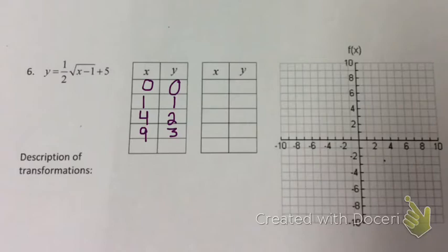Now to actually apply the transformations. If I look under my radical, I notice that I have x minus 1. Remember, you always do the opposite for your x values. So since it says minus 1, I'm going to add 1 to all of my x values.